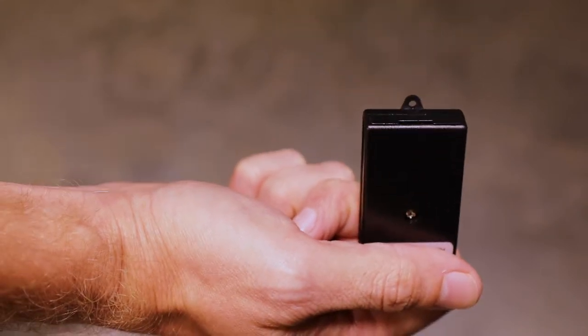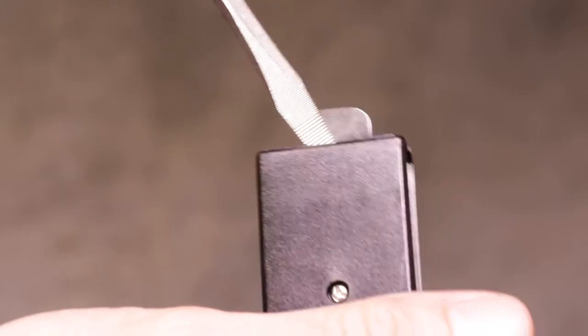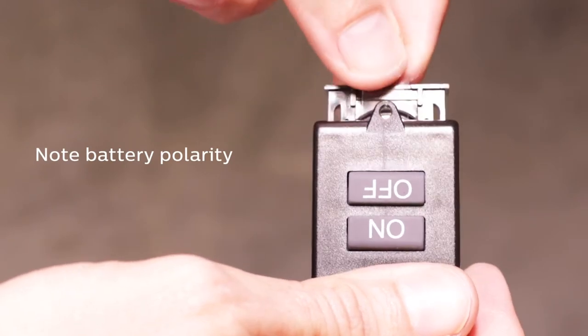Pull the plastic battery tab from the remote. If the tab does not release easily, use a small flat-head screwdriver to remove the battery drawer.